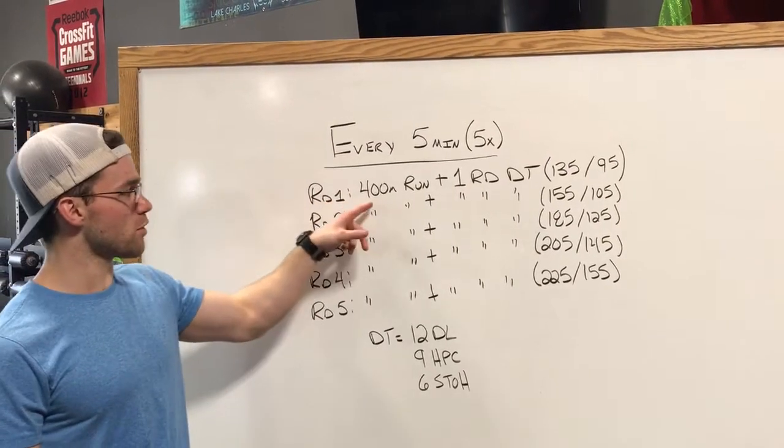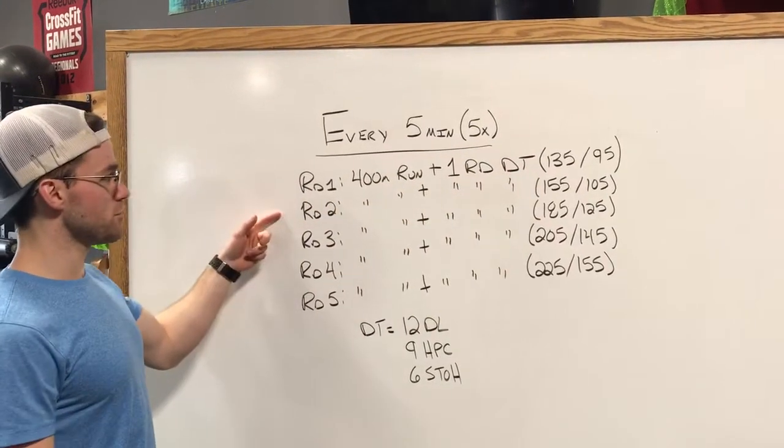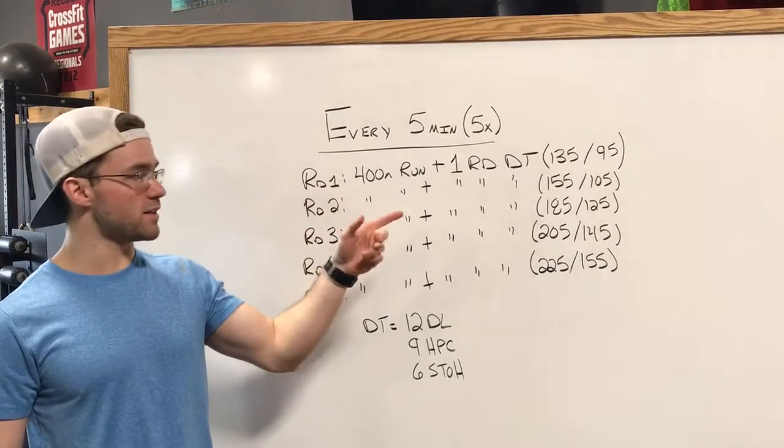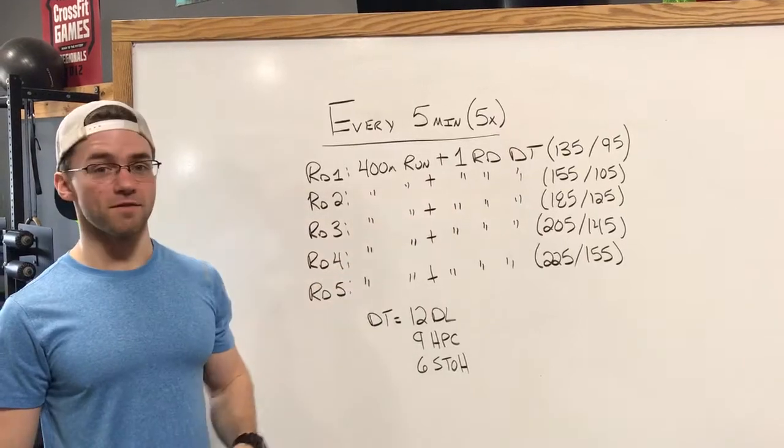Round one will be a 400 meter run plus one round of DT at 135/95. Round two, 400 meter run, one round of DT, 155/105. Round three, 400 meter run, one round of DT, 185/125.